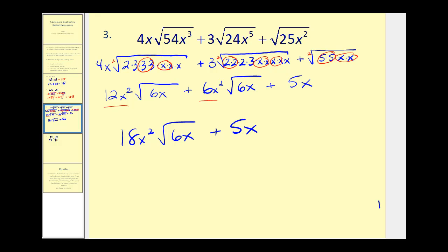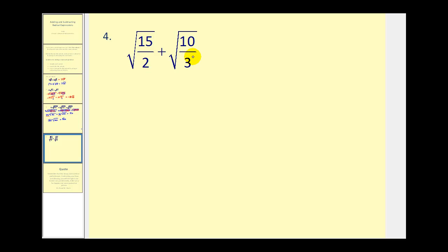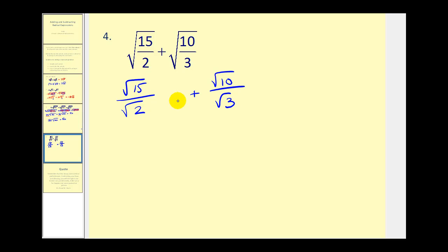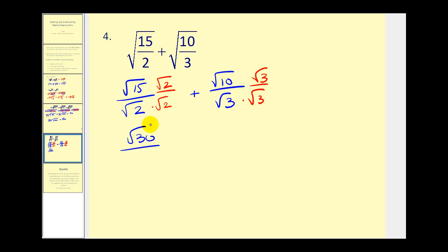Let's try one more. The first step is to simplify each of these before we can determine whether they're like radicals. We rewrite this as the square root of fifteen divided by the square root of two, plus square root of ten divided by square root of three. We need to eliminate the square root from the denominators — this would simplify perfectly if we had two factors of two, so multiply the numerator and denominator by square root two. Over here, if we had two factors of three this would simplify perfectly, so multiply by the square root of three on top and bottom.